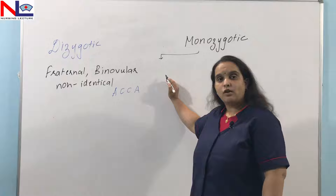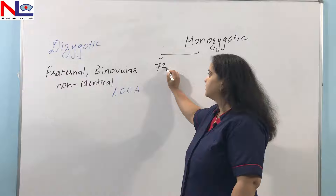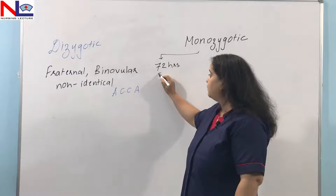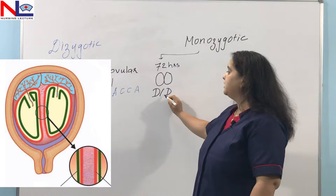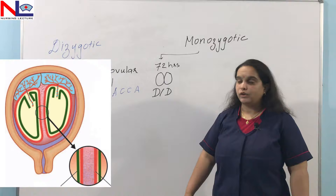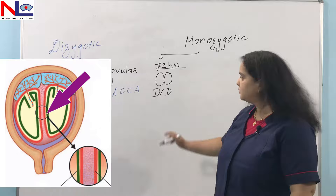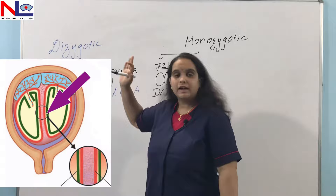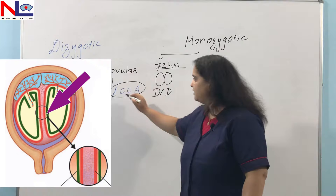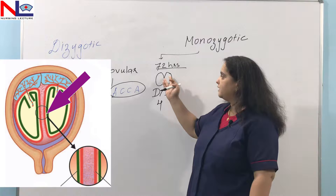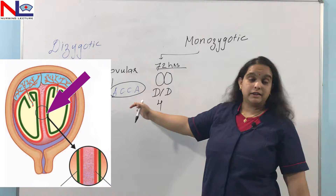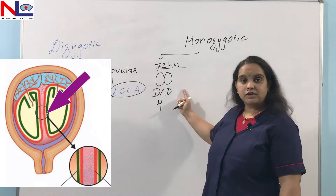Once fertilized to form the zygote, there are further varieties in monozygotic twins depending on when division takes place. If division occurs within 72 hours of fertilization, the developing fetuses are of the DD variety — dichorionic diamniotic — meaning there are two amnions and two chorions. This condition is similar to dizygotic twins in having four intervening membranes, but the sex is always the same.